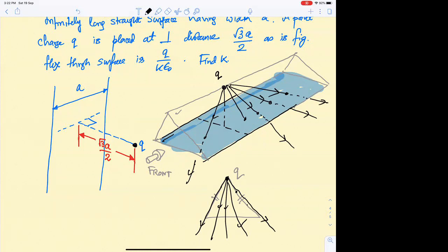This angle - as we said, this distance is √3a/2, and this part is a/2, so from geometry this happens to be 60 degrees.